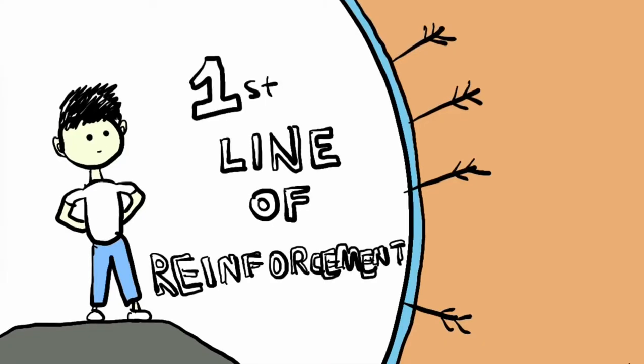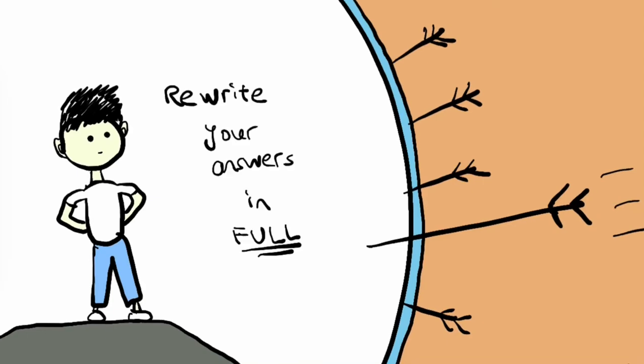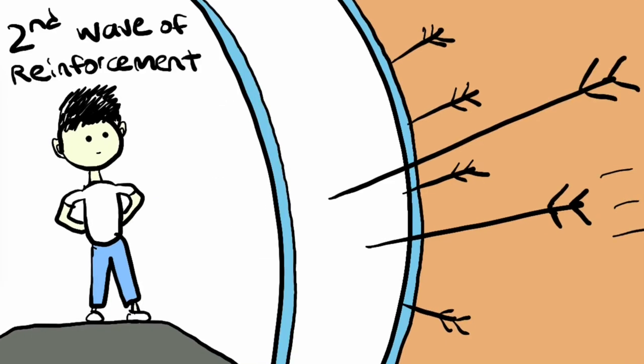This is your first wave of reinforcement of getting that content into your head. Then, when you self-check your answer against the answer key, do your corrections by rewriting the answers in full again. This is your second wave of reinforcement of remembering your content.